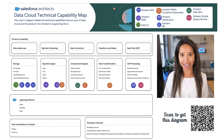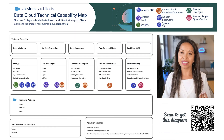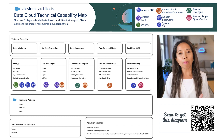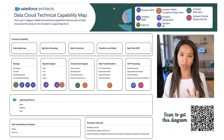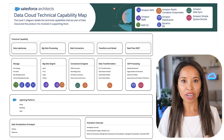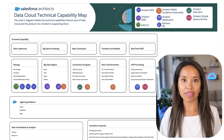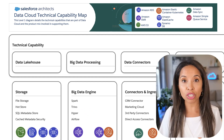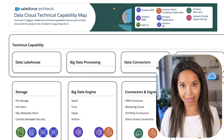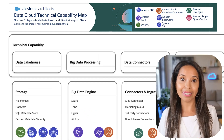This diagram details the technical capabilities that are a part of data cloud and the product mix involved in supporting them. So, let's start on the left-hand side of this diagram. We're going to talk about the data lake house, which is where we store all the data in data cloud.